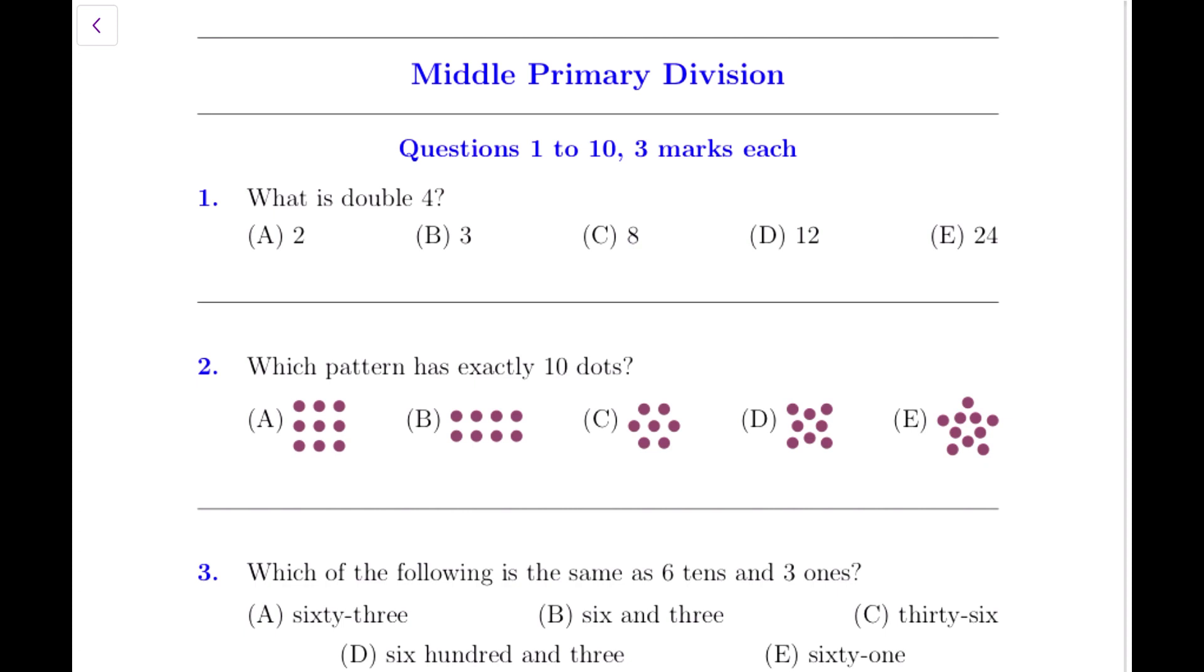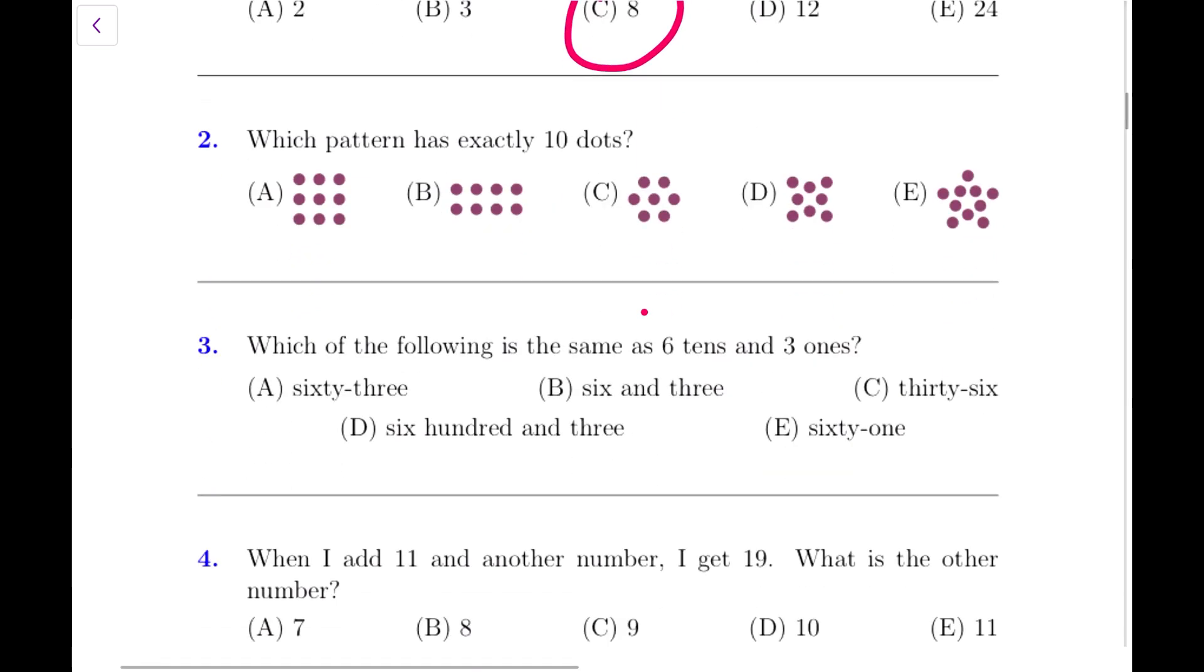Question number 1: What is double 4? Double 4 is easy. Let me get my pen. Double 4 is 4 and 4, that is 8. Easy peasy.